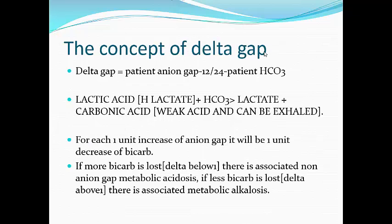What is the concept of the delta gap? The delta gap formula equals: (patient's actual anion gap minus the normal anion gap) divided by (24, which is normal bicarbonate, minus the patient's bicarbonate).